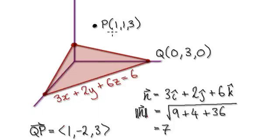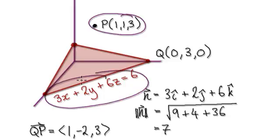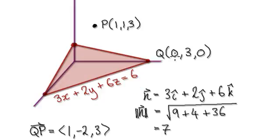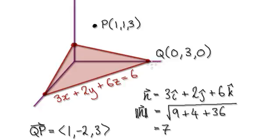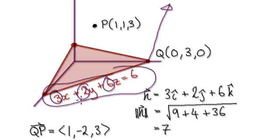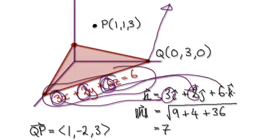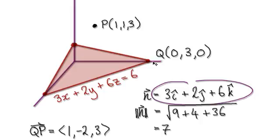Given — remember, all that we were given right from the start of the question was this point and this equation. So from this equation, you can easily locate this point. Set x to be 0 and set z to be 0, so y must be 3. So the location here must be (0, 3, 0). And then we want the normal vector. When an equation is given in this form, you can always extract the normal vector by extracting these three coefficients. So the normal vector would be (3, 2, 6). So this is our normal vector.